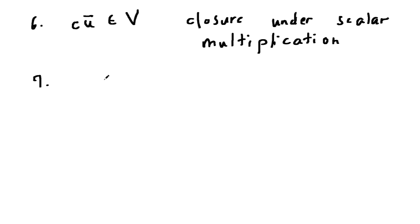Now the seventh property says if you take c and multiply it with u plus v, the c distributes: cu plus cv. This is distributivity.